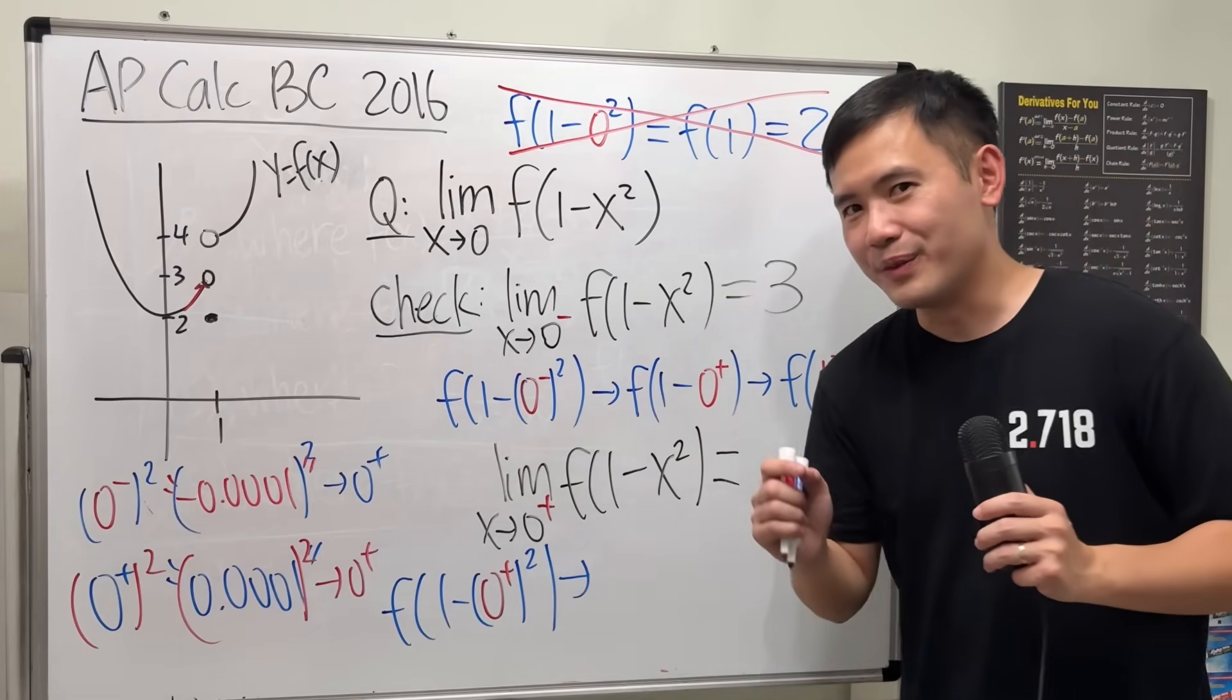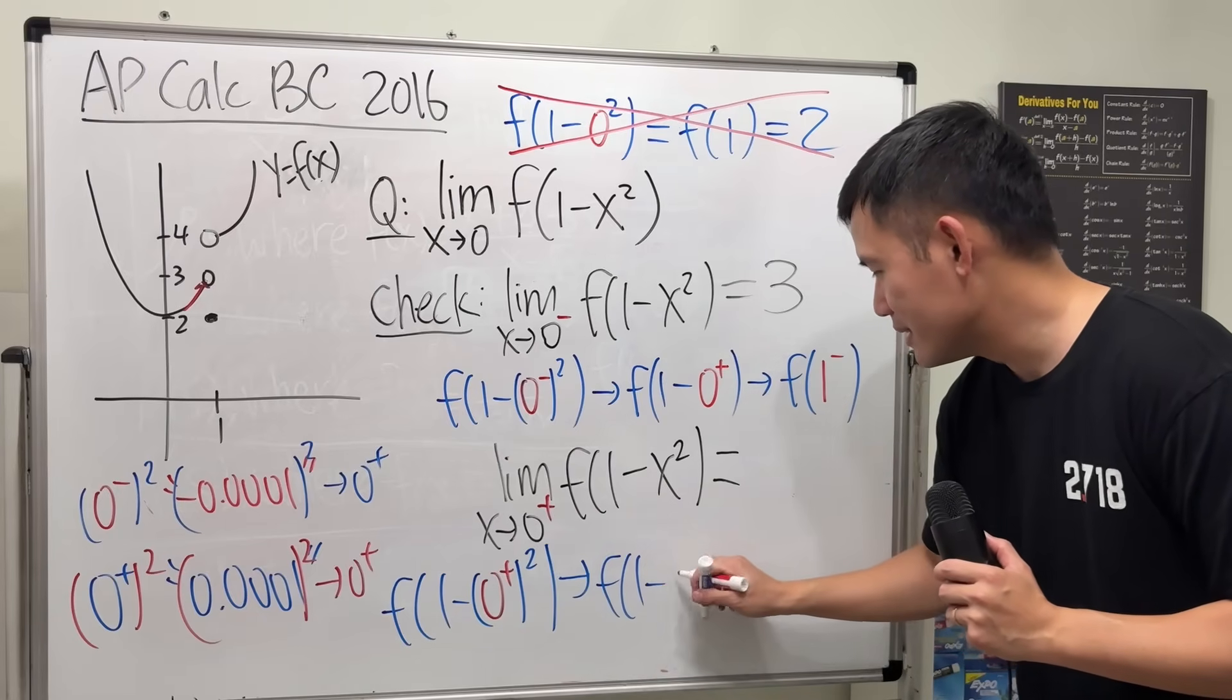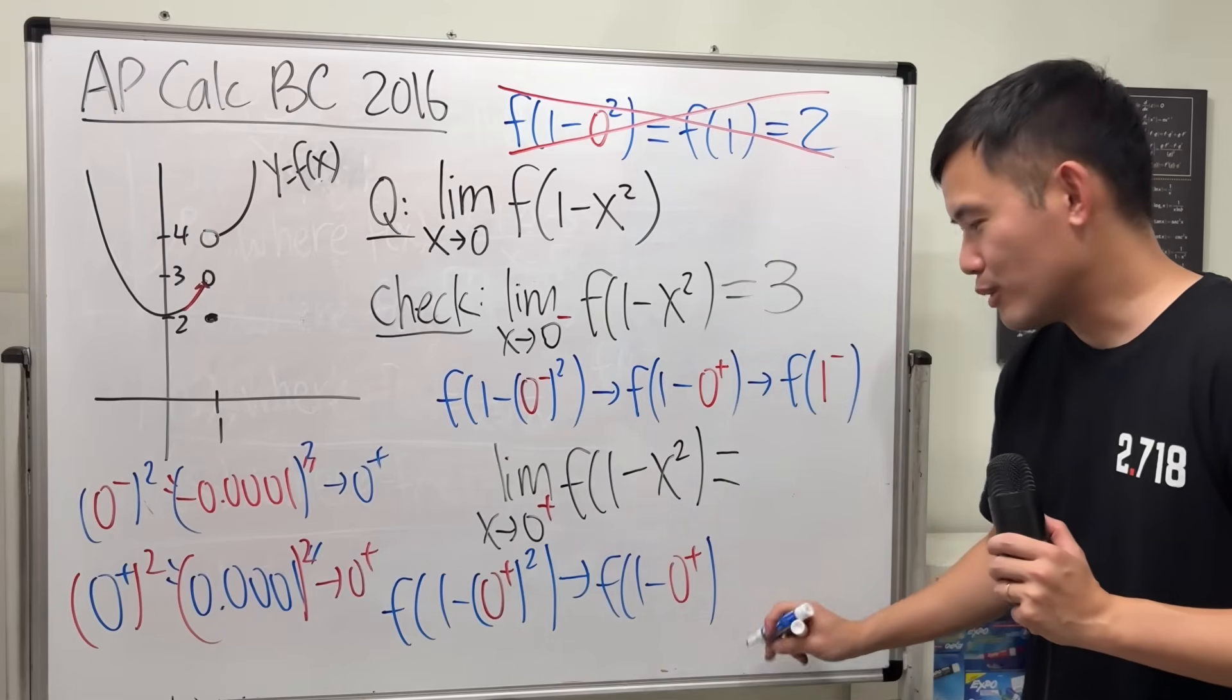Still positive. A little bit bigger than 0. So, we get f(1-0⁺). 1 minus 0⁺.